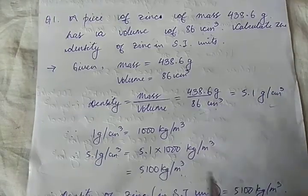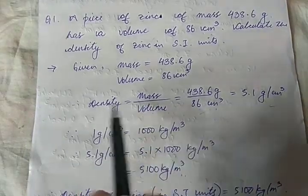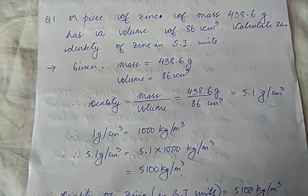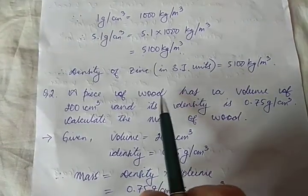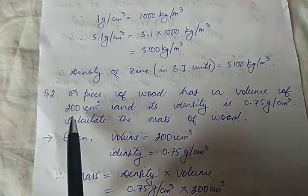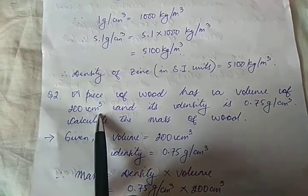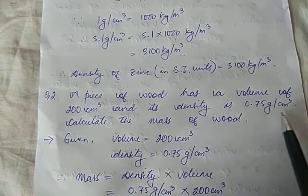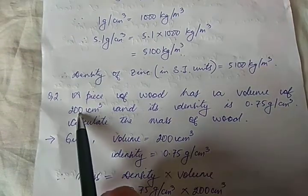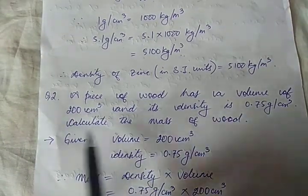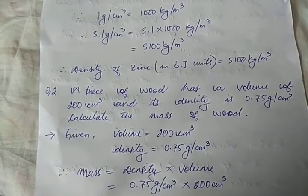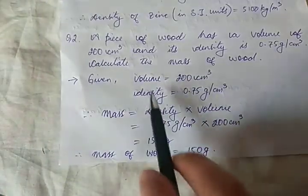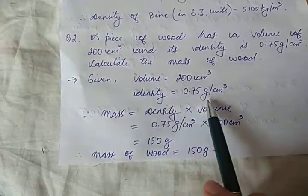It's pretty straightforward if you know your conversions correctly. Now, Problem 2: A piece of wood has a volume of 200 cubic centimeters and a density of 0.75 g/cm³. Volume is given and density is given. We have to find the mass of the wood.